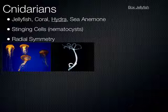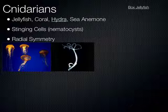This hydra is going through asexual reproduction called budding. Another hydra is basically growing out of the side of this adult hydra. It starts growing out of the side, gets larger, breaks off, floats away, and becomes its own hydra — it's a form of asexual reproduction.